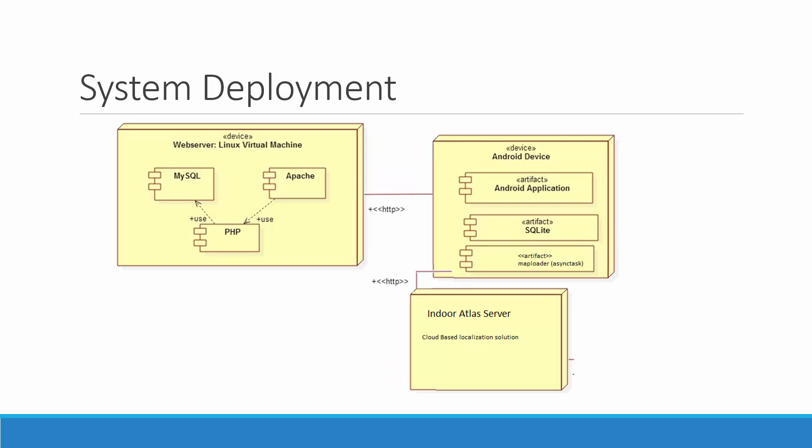System deployment is essentially the same as the previous iteration: we have a Linux virtual machine running MySQL, Apache, and PHP on the server side, and an Android device acting as the client with its own local SQLite database. The Android device also has a MapLoader asynchronous task that polls the IndoorAtlas service in the background, which — shown by the HTTP line — contacts the IndoorAtlas service, takes all the magnetic field readings and accelerometer data, computes your location, and returns it.